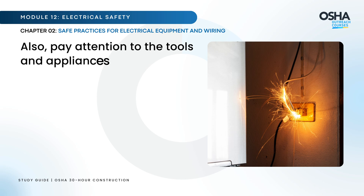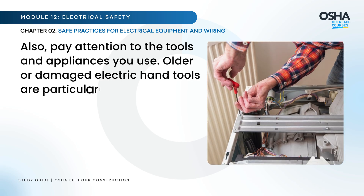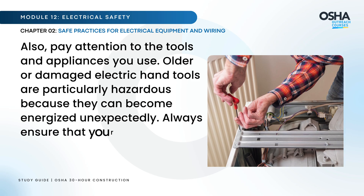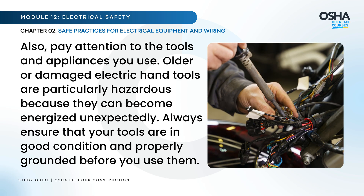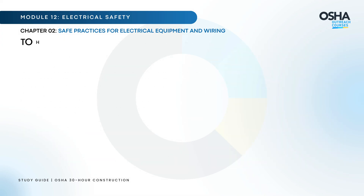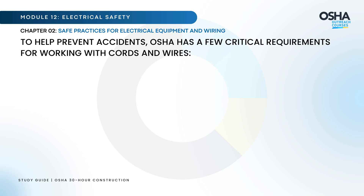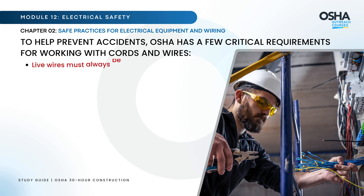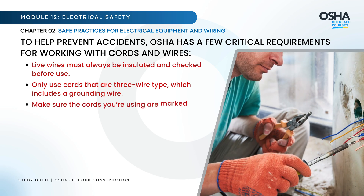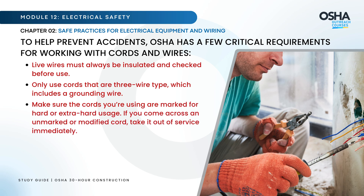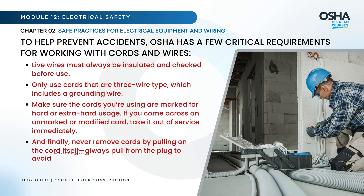Pay attention to the tools and appliances you use. Older or damaged electric hand tools are particularly hazardous because they can become energized unexpectedly. Always ensure that your tools are in good condition and properly grounded before use. OSHA has critical requirements for working with cords and wires: live wires must always be insulated and checked before use; only use cords that are 3-wire type, which includes a grounding wire; make sure cords are marked for hard or extra hard usage. If you come across an unmarked or modified cord, take it out of service immediately. Never remove cords by pulling on the cord itself — always pull from the plug to avoid damaging the wiring.